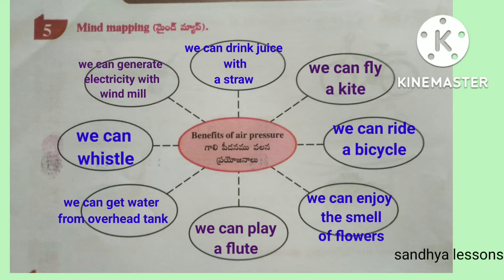Fifth, mind map: Benefits of air pressure. We can drink juice with a straw. We can fly a kite. We can ride a bicycle. We can enjoy the smell of flowers. We can play a flute. We can get water from an overhead tank. We can whistle. We can generate electricity with a windmill.